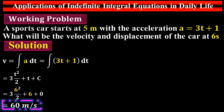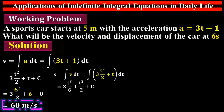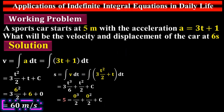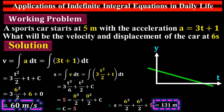To find the displacement after 6 seconds: displacement equals the integral of velocity, where v = (3t²/2) + t. Taking the integral and substituting the initial condition s = 5 at t = 0 gives C = 5. Substituting t = 6, the displacement is 131 meters after 6 seconds. Let me draw it graphically — this is the graph of 3t + 1; at the x-axis it is 3, and at the y-axis it is 1.